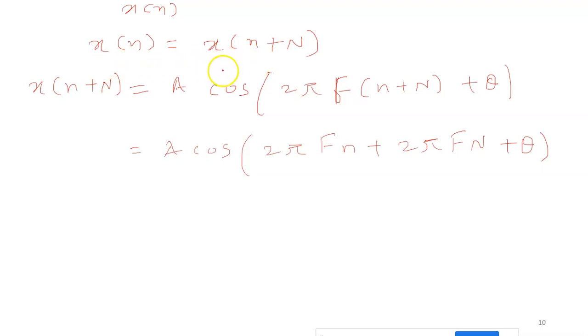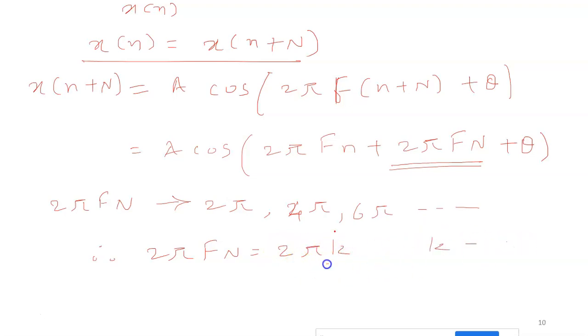To satisfy this equation and make the signal periodic, the term 2 pi fN should take a value of 2 pi, 4 pi, 6 pi or so on. It should be in the multiple of 2 pi, and therefore 2 pi fN should have value of 2 pi k where k is any integer. So fN should take a form of 1, 2, 3, 4 like this.